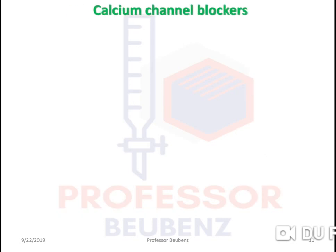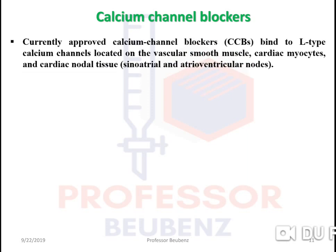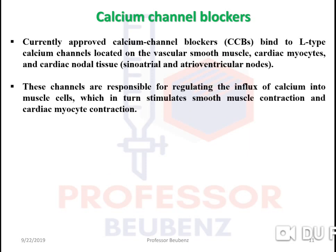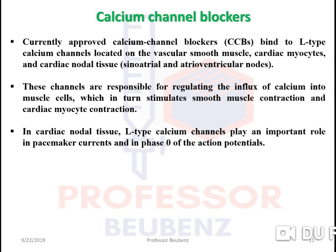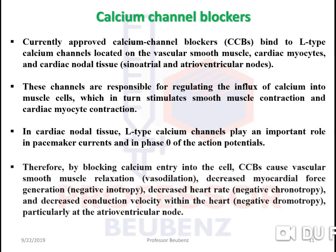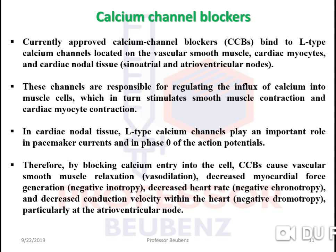Moving forward to calcium channel blockers: currently approved CCBs bind to L-type calcium channels located on vascular smooth muscles, cardiac myocytes, and cardiac nodal tissues — that is, the sinoatrial and atrioventricular nodes. These channels regulate the influx of calcium into muscle cells, which stimulates smooth muscle contraction. In cardiac nodal tissue, L-type calcium channels play an important role in pacemaker current and in phase zero of the action potential. By blocking calcium entry, CCBs cause vascular smooth muscle relaxation.